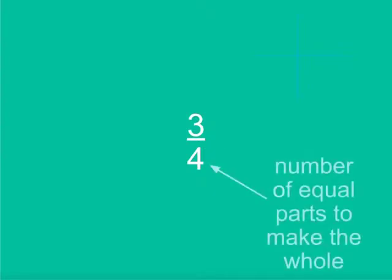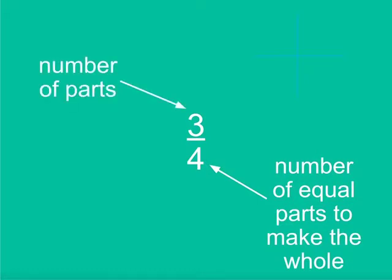With fractions, it is important to understand both the numerator and denominator to understand the value of the fraction. The denominator represents the number of equal parts to make the whole, and the numerator represents the number of equal parts in this fraction. So in this case, it is three of four equal parts, or three quarters. Being able to see fractions as areas of shapes is important for understanding fractions.